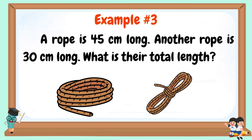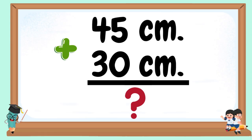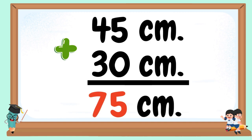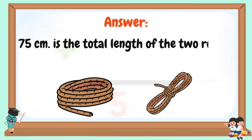Example number 3: A rope is 45 centimeters long. Another rope is 30 centimeters long. What is their total length? 45 centimeters plus 30 centimeters. 5 plus 0 equals 5, 4 plus 3 equals 7. 75 centimeters is the total length of the two ropes.